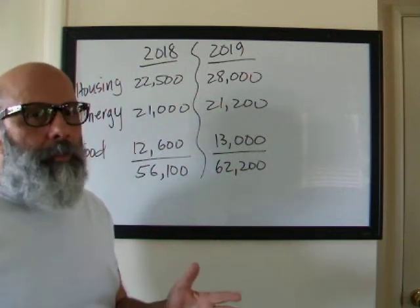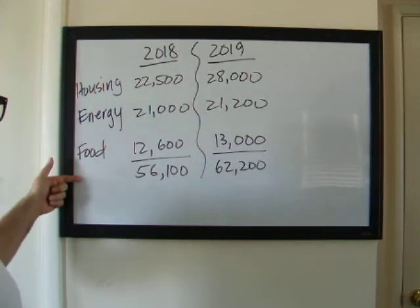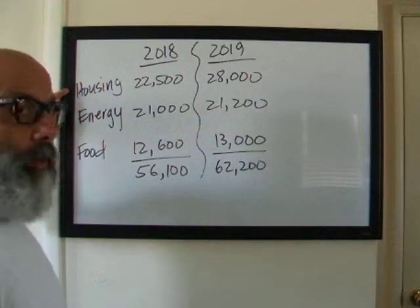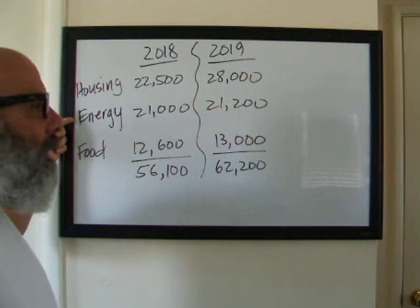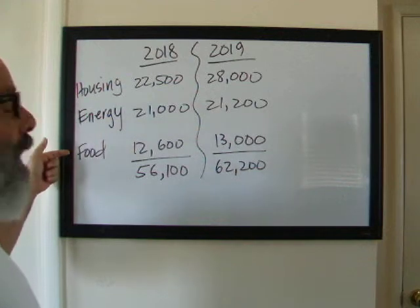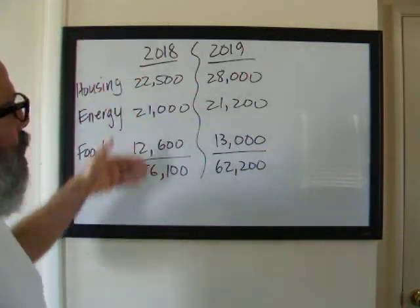Now we all buy different stuff, but economists put these things into big categories that we buy. Pretty much, if we're lucky, we all buy housing. We all pay for gas and water and electricity and gasoline for our cars and food.